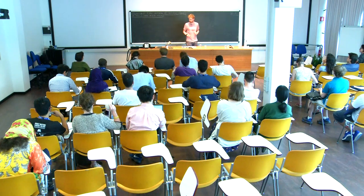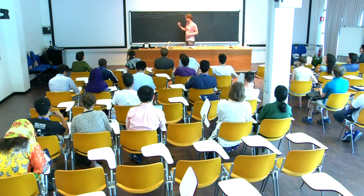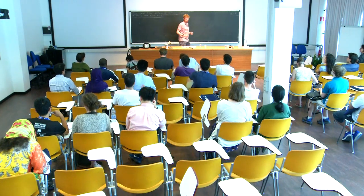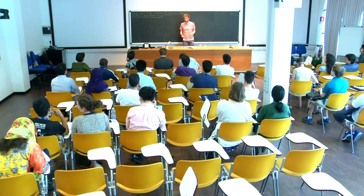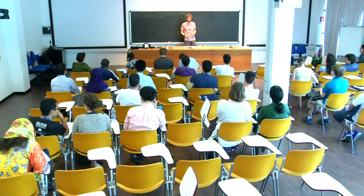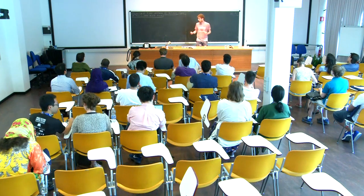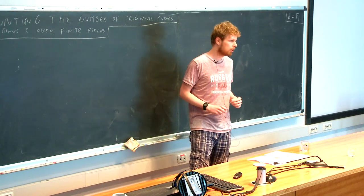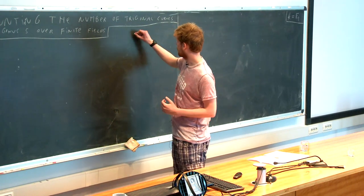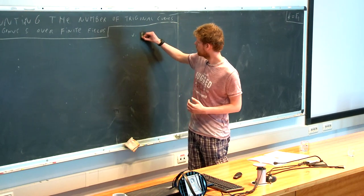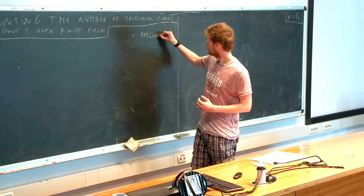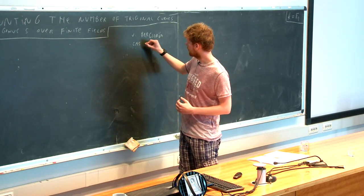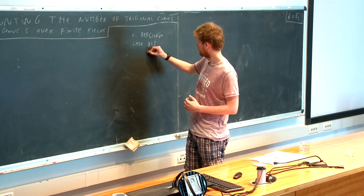Thank you for allowing me to give this talk here. My talk will be about counting the number of trigonal curves of genus 5 over finite fields. First, I'll explain why we want to do this. Then I'll say a bit about how we can see these trigonal curves as plane curves. Then I'll describe how we count these plane curves using a modified sieve principle. These methods are similar to the ones by Jonas Baerström, which he used for the case where the genus is 3 and non-hyperelliptic curves.